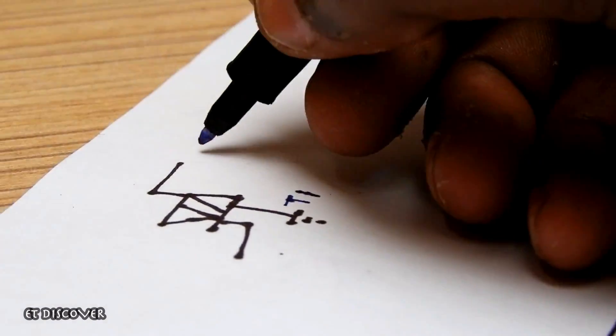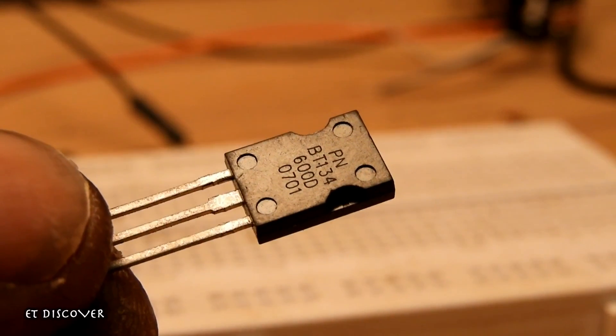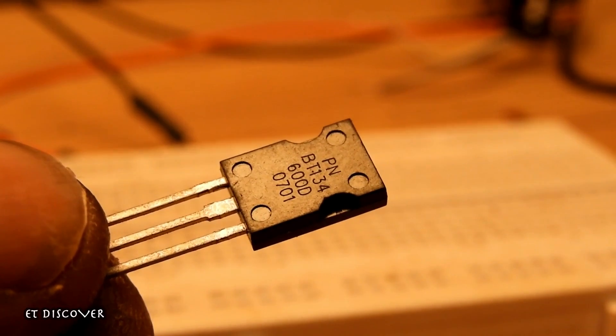Their pin names are M1, M2 and gate. There are different types of TRIAC. But I have used here BT134 TRIAC.